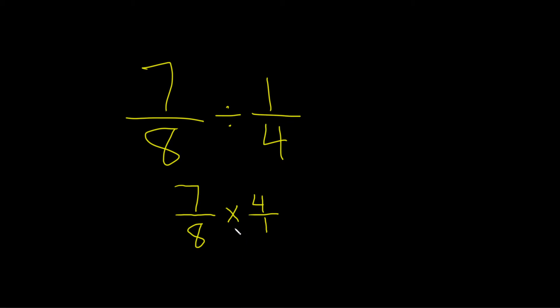Okay now we're going to see if we have any cancellation. So the 7 and the 1 nothing happens here and then the 4 and the 8 well it looks like we can do some cancellation here. 4 goes into 4 one time and 4 goes into 8 two times. So what we do is we put lines through them and then we write the number there like that.